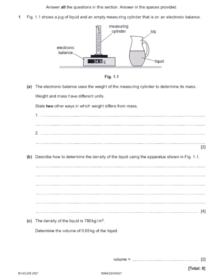The question says figure 1.1 shows a jug of liquid and an empty measuring cylinder that is on an electronic balance. The electronic balance is showing the mass of 34.9 grams for the empty measuring cylinder, and we also have liquid inside the jug. The electronic balance uses the weight of the measuring cylinder to determine its mass.